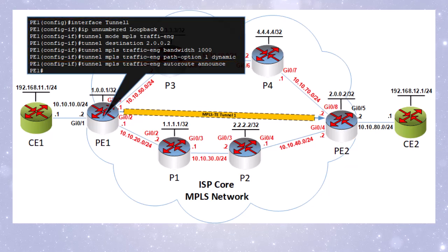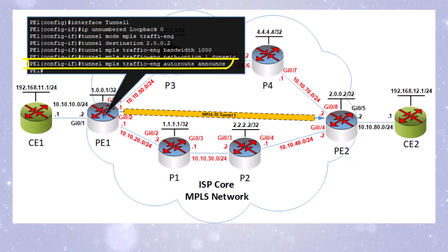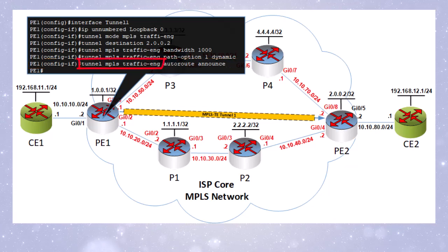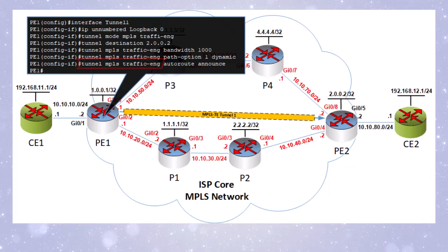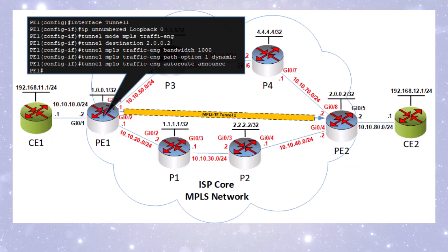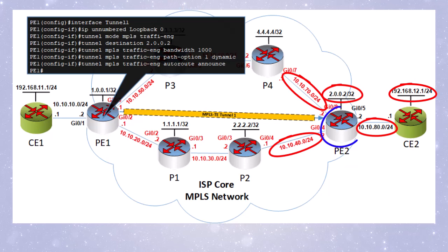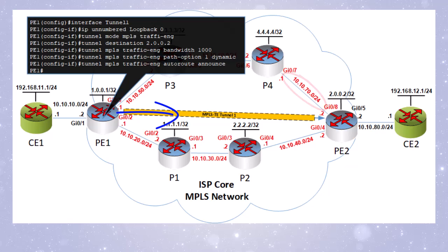Let's configure auto route announce on our head end router, which is our P1 router. I've included the configurations already applied to this interface for reference. To add auto route announce, it's as simple as adding this one command. Notice that this command falls under the tunnel MPLS traffic engineering set of commands — it's similar to the bandwidth and various path options available for TE tunnels.